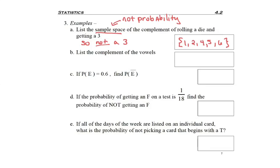Problem 3b: list the complement of the vowels. So in terms of the alphabet, anything that's not a vowel is a consonant, or all the consonants.